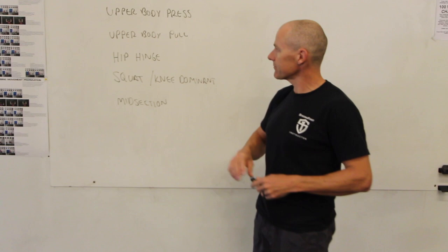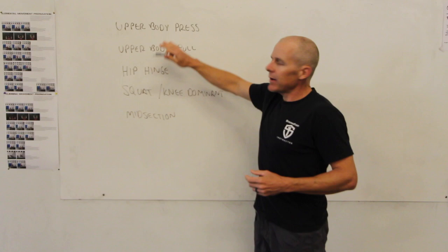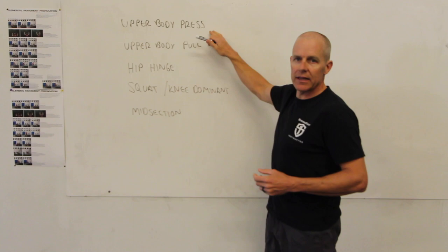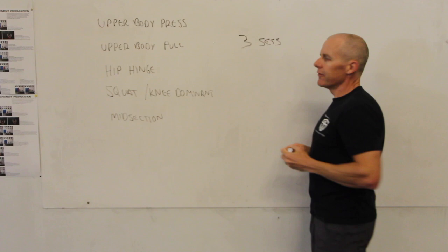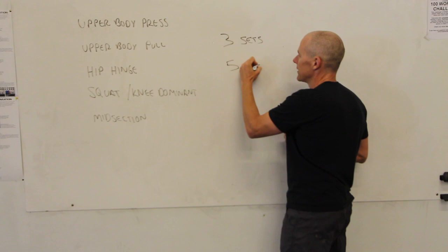When you're designing your strength training session, probably everybody watching this video will know an exercise in each one of these and they'll say, 'Oh yeah, I really can do push-ups, I'm good at this.' I'll put that in as my upper body press. So we like to start out, make it really easy. We do three sets of each of these exercises and we'll do somewhere around five reps.